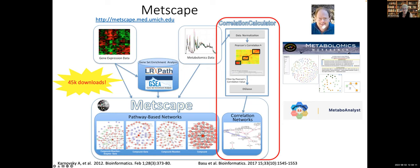This is a standalone Java-based interface called Correlation Calculator. It's freely available and can be downloaded. It can generate partial correlation networks that can be visualized in our tool Medscape, which is shown here. Medscape is an app for Cytoscape. I checked as recently as two days ago — we had on the order of 45,000 downloads. This statistic is provided by Cytoscape. Of course these are redundant, and the actual number of users is probably a little bit smaller, but nonetheless we're excited to have that many users of Medscape.